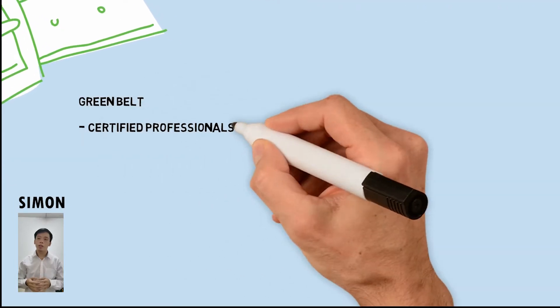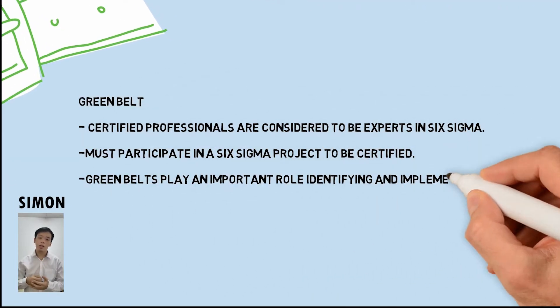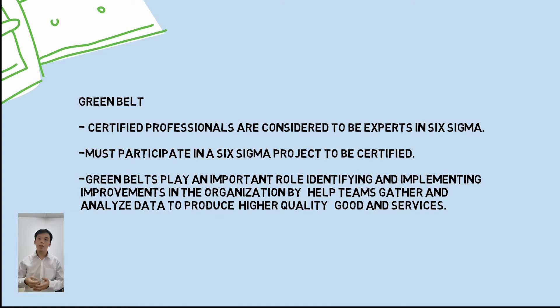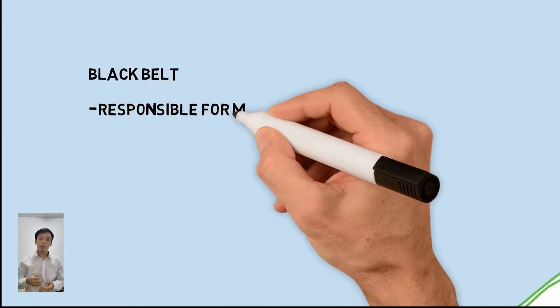Green belt professionals are considered experts in Six Sigma. After green belt, the next belt is black belt.